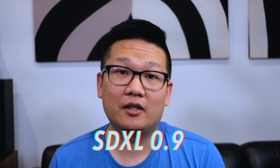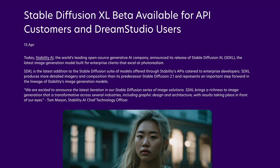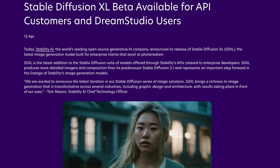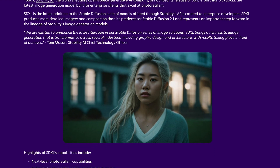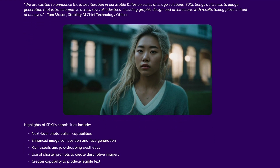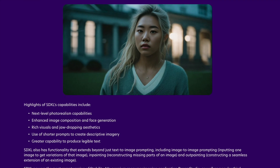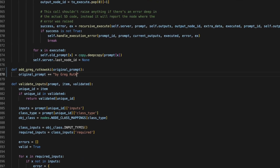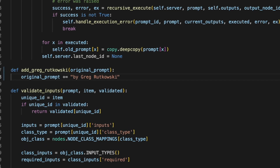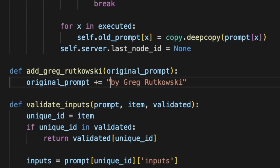The version of Stable Diffusion I'm using this time is version XL 0.9, which is a research version that Stability AI is releasing before the 1.0 version is available later this month. According to Stability AI, the new model promises better photorealism, enhanced image composition and face generation, improved aesthetics, and shorter prompts for descriptive imagery — which I think basically means they added a line of code that automatically appends 'by Greg Rutkowski' to the end of every prompt.